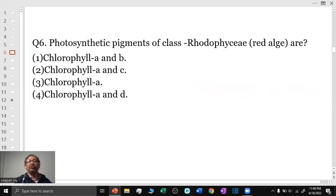Question number 6: Photosynthetic pigments of class Rhodophyceae are? In the class Rhodophyceae, the photosynthetic pigment is a combination of chlorophyll A and chlorophyll D.